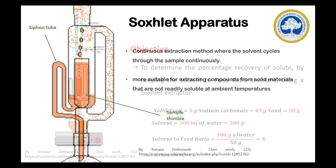In a burette, 0.1 normal HCl is taken, and 10 ml of collected sample is taken in the conical flask with methyl orange as indicator. The titration is carried out until the appearance of brick red color. The volume of 0.1 normal HCl required to neutralize the sodium carbonate is noted down. Once we have the volume of HCl required, we can move to the calculations.